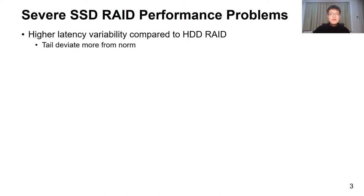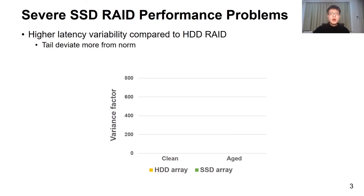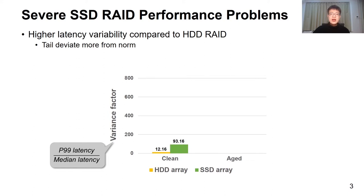However, AFAs suffer from severe performance variability. Compared to their HDD counterparts, they are much faster, but their tail latency deviates way more from the norm. Here we give a quick comparison between the latency variance factor, calculated as the ratio between the P99 and median latency of performing an exchange trace. On clean disks, this factor is 12 on HDD reads and 93 on SSD ones.